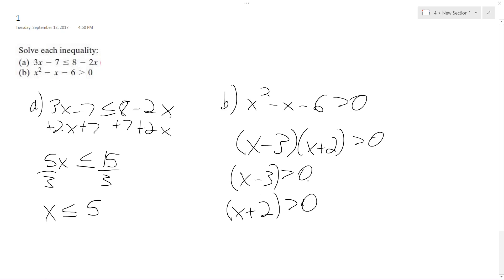So what makes x minus 3 greater than 0? x has to be greater than 3. And then here, x has to be greater than negative 2.